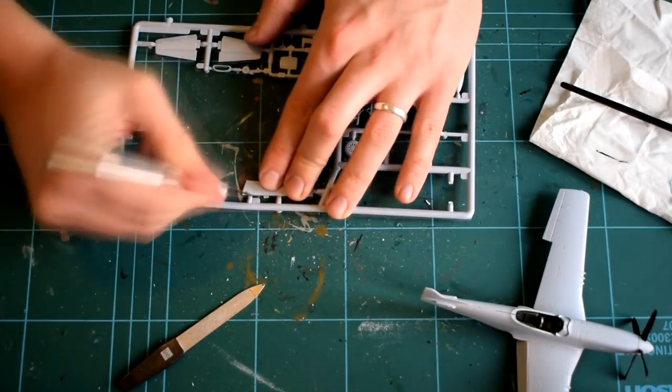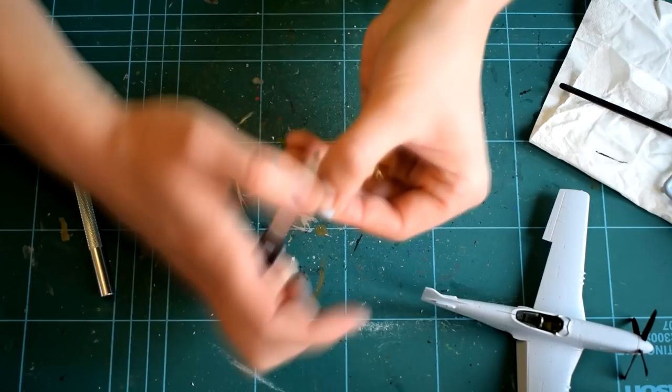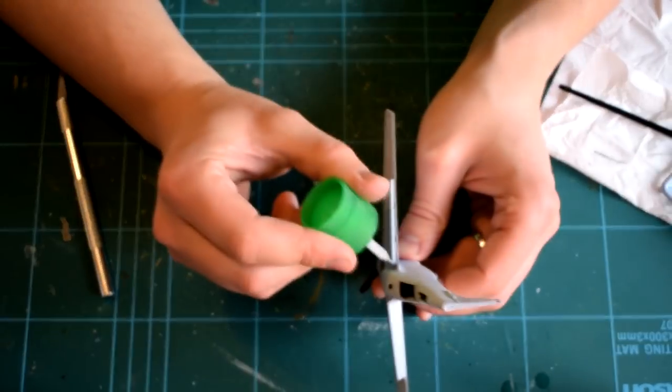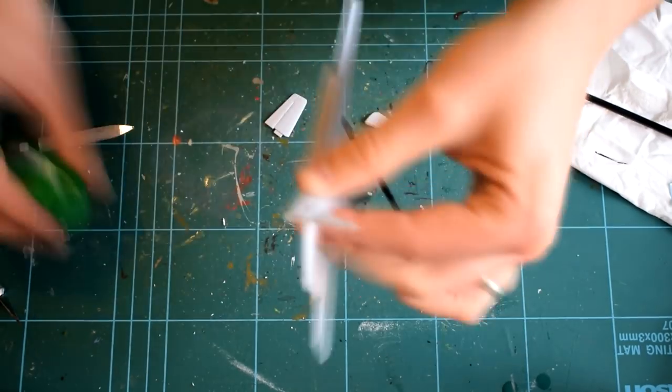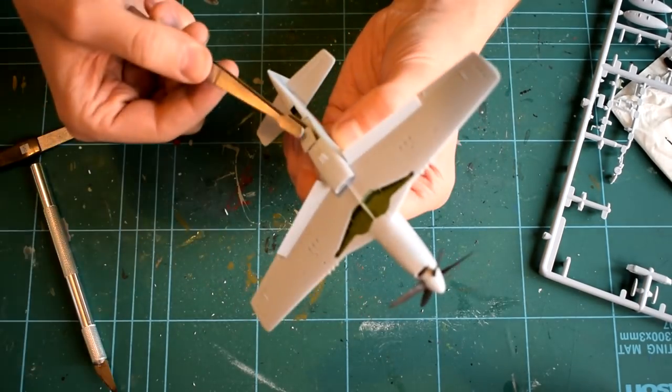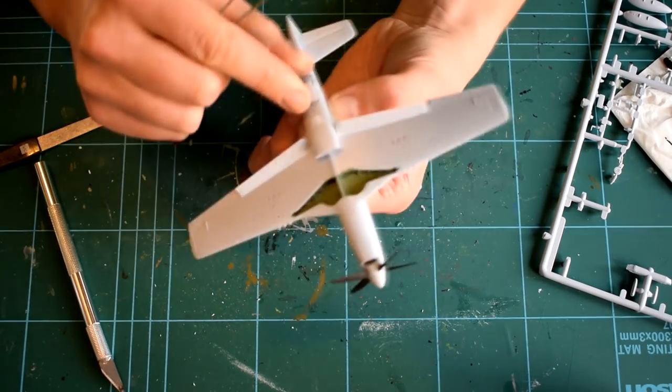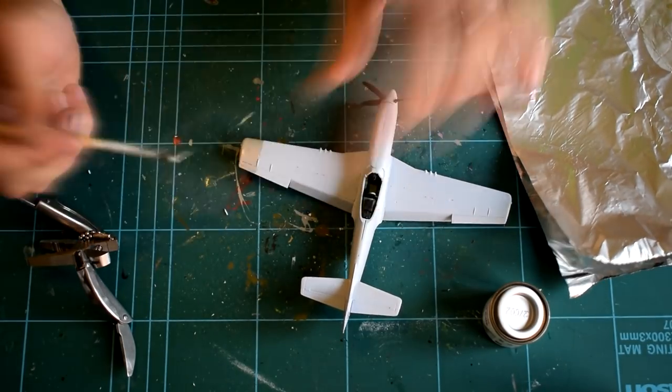The wings can then be slid into the correct location and cemented in place. I decided to add the flaps in the down position, but parts are included for the raised position too. These were then followed by the elevators and rudder components. I then added the air intake and exhaust vents. I used tweezers at this stage as it was quite fiddly.